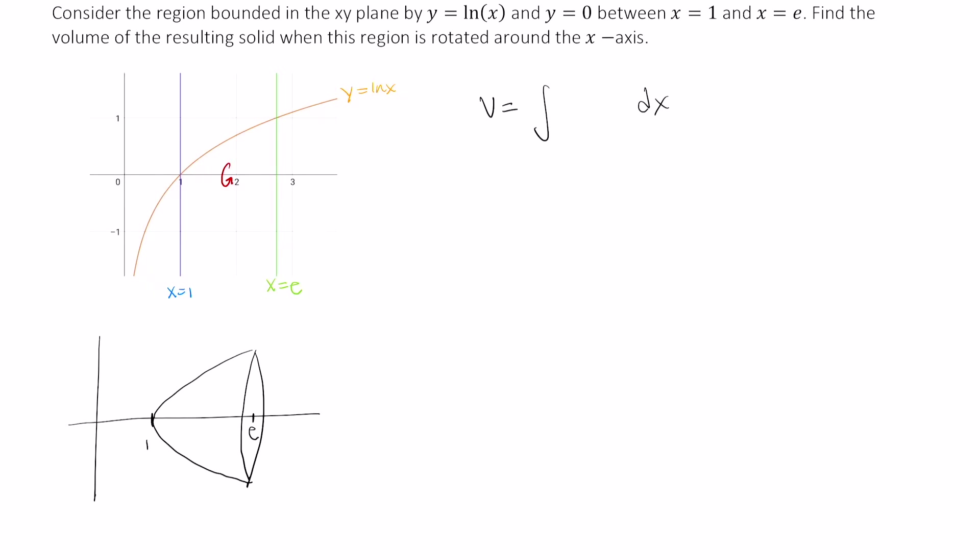Volume of a solid of revolution using the slicing method can really just be thought of as the integral of the area of a representative slice. So what is the area of a representative slice going to look like? So the area is going to be the area of this circle here. And let me draw a two-dimensional version of that. So that would be here, and in the middle here we have the x-axis.